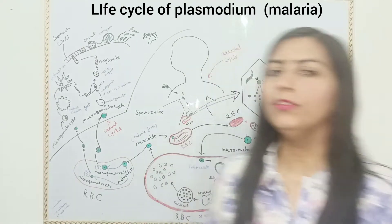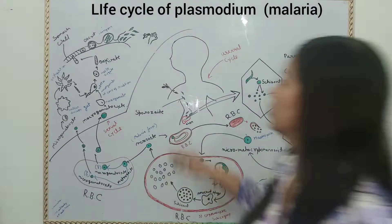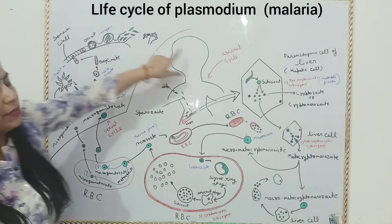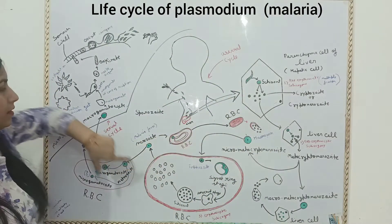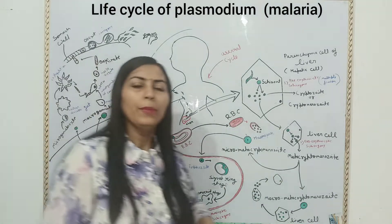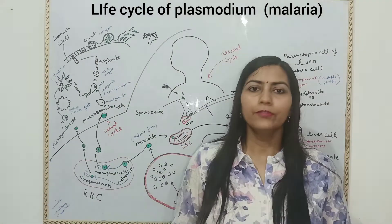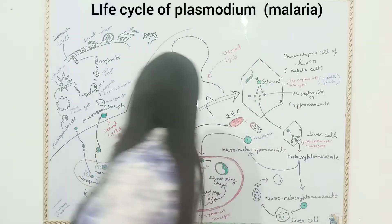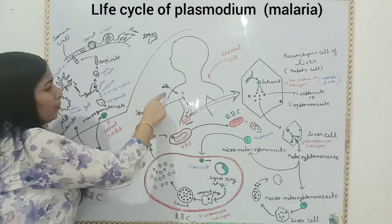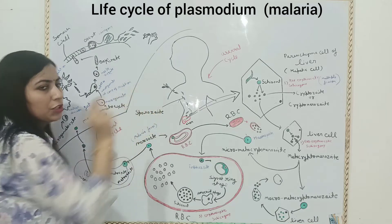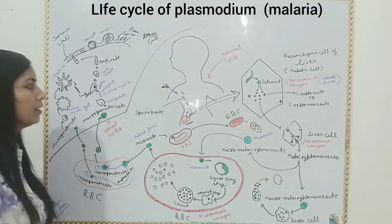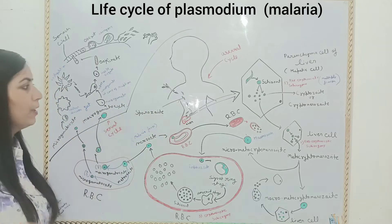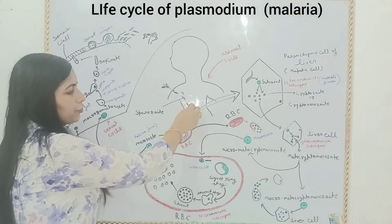Hello students. Today we will discuss about the life cycle of Plasmodium. This is the life cycle of Plasmodium vivax. Plasmodium is a parasite which is a causative agent of malaria. When a female Anopheles mosquito bites a human, it enters the sporozoites of Plasmodium into the bloodstream of humans.